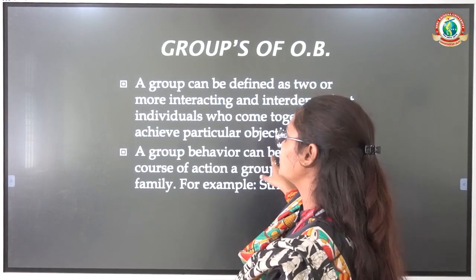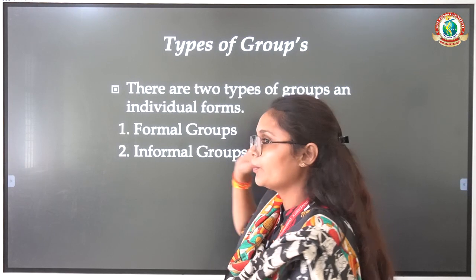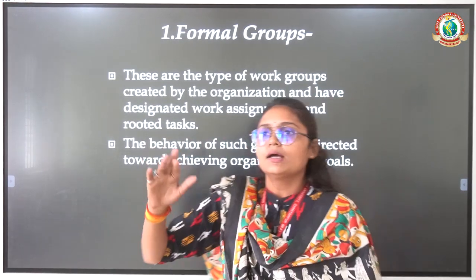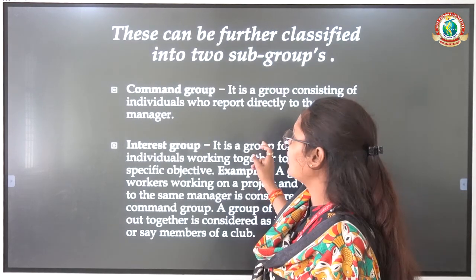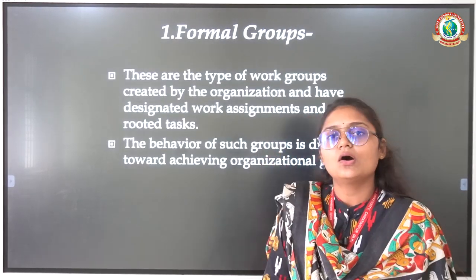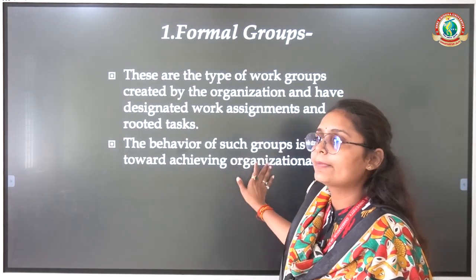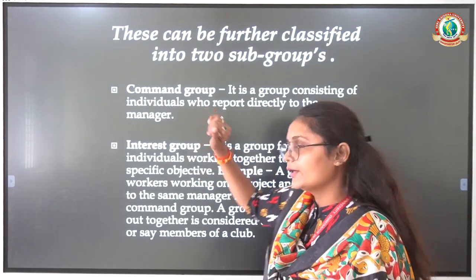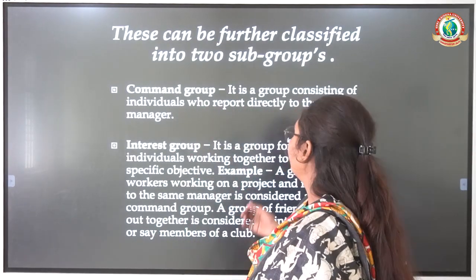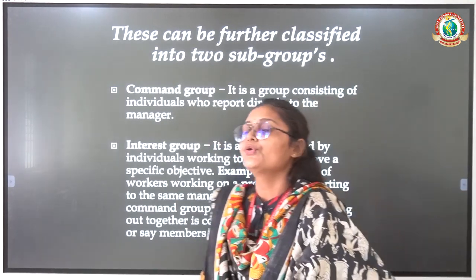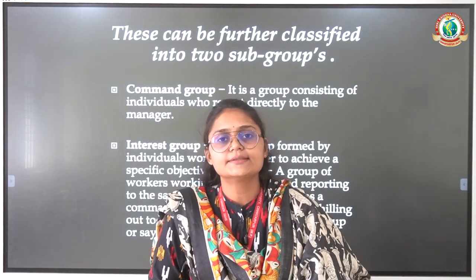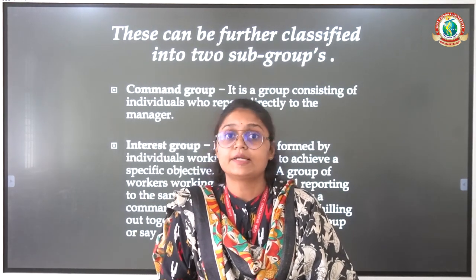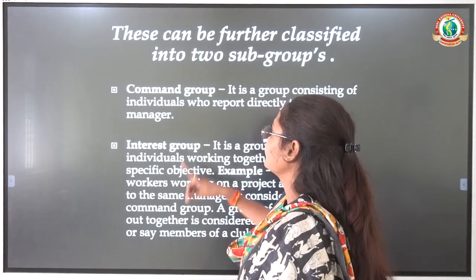Next is Groups of OB. Groups are divided into formal and informal, as we have already seen. Formal groups are inside the organization and informal groups are outside. Formal groups are further divided into sub-units: first is the command group, and interest group. In the command group, individuals report directly to the manager — you have to do it in the given time duration, otherwise it will not be good for you. That is the commanding power — it is called command and interest of group.